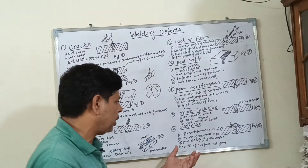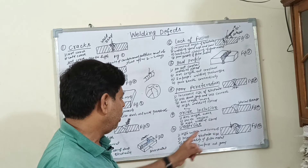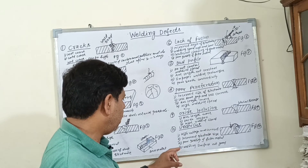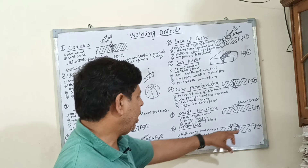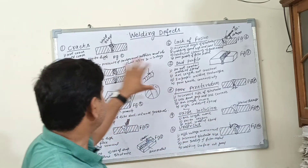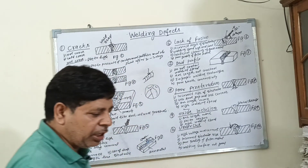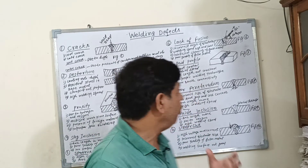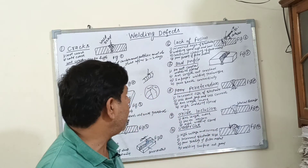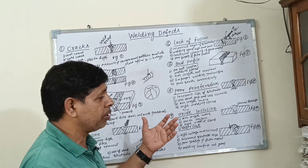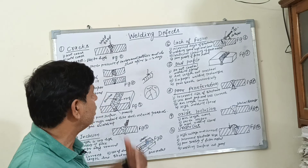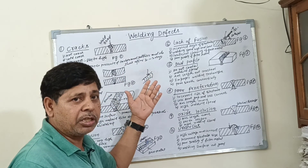The reasons behind undercut and oxide inclusion include: high voltage and current, incorrect electrode size, poor quality of filler metal, and welding surface not being neat and clean. These are all the welding defects. All engineers and designers should have knowledge about welding defects when designing any structures or machine parts, as these are very serious defects. I hope you will like my lecture. Thank you very much.